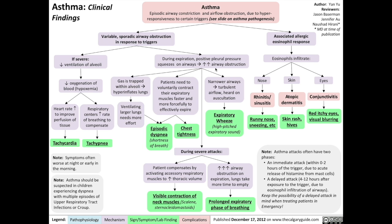The increased airway obstruction also leads to narrower airways. The narrower airways result in turbulent airflow, which is heard on auscultation mostly when the patient expires. This turbulent airflow manifests on auscultation as an expiratory wheeze, which is a high-pitched expiratory sound. Finally, during severe attacks, airway obstruction results in the patient compensating by activating accessory respiratory muscles to increase thoracic volume. That results in visible contraction of neck muscles such as the scalene and sternocleidomastoid muscles. Severe attacks also mean that the lungs take longer to empty, resulting in a prolonged expiratory phase of breathing.